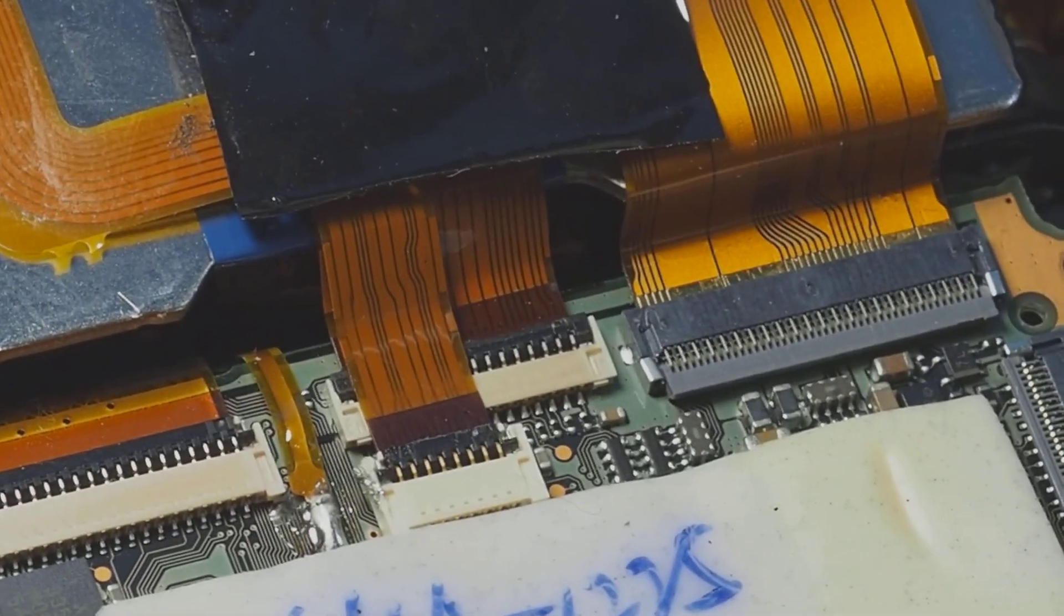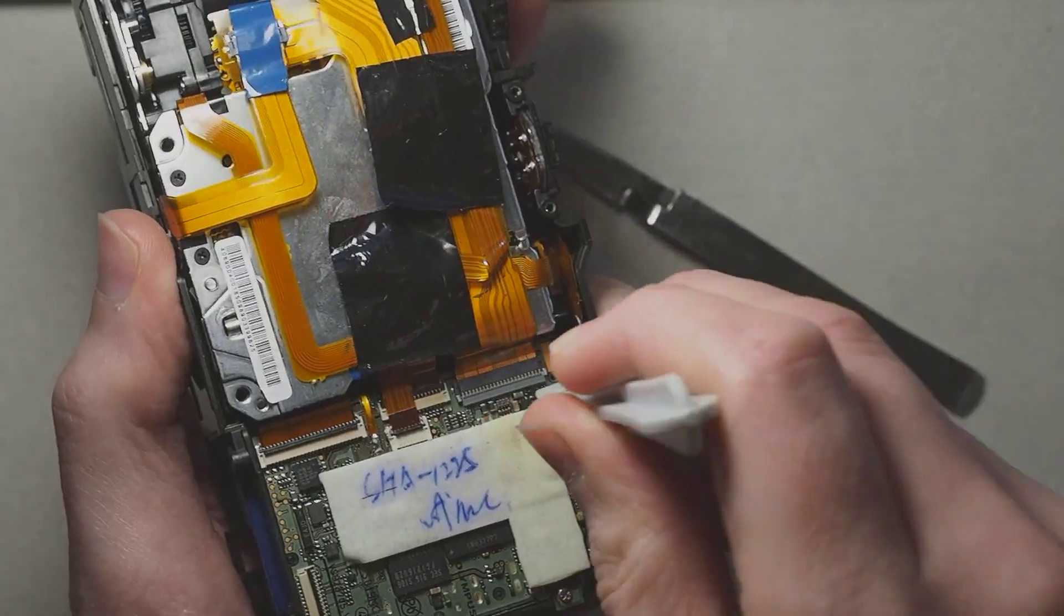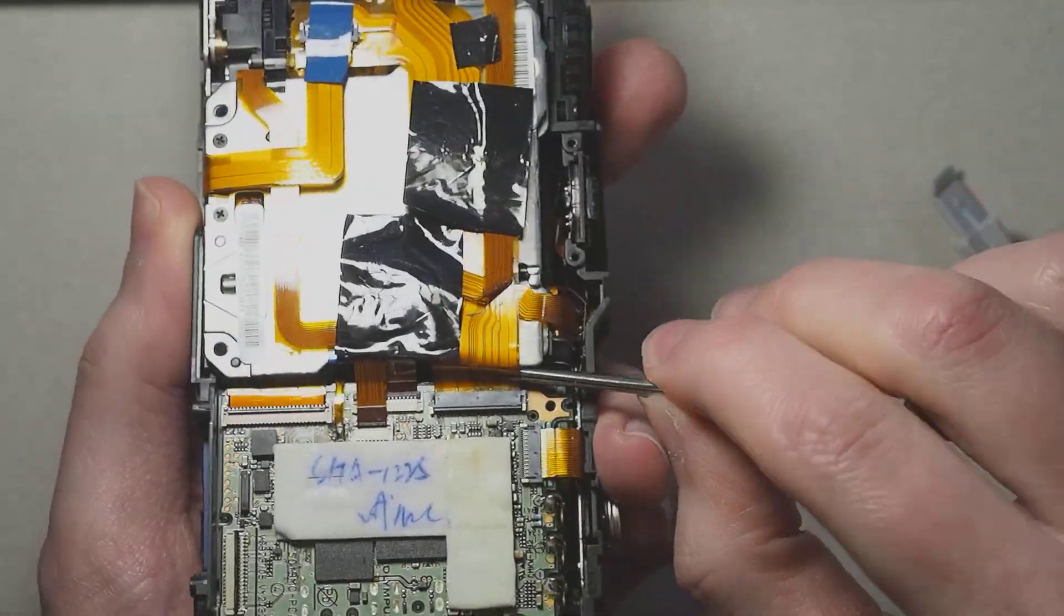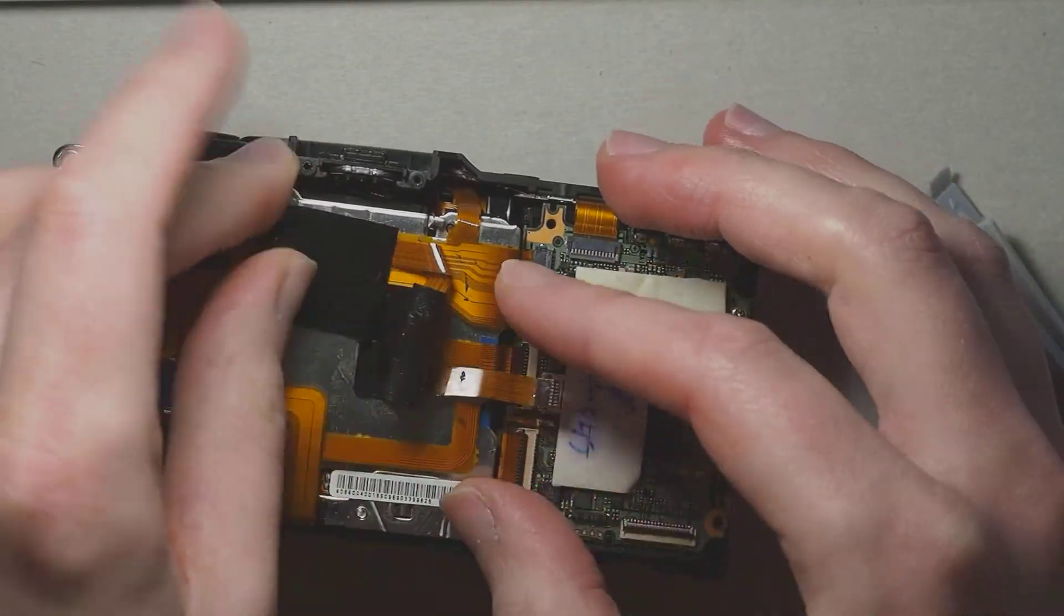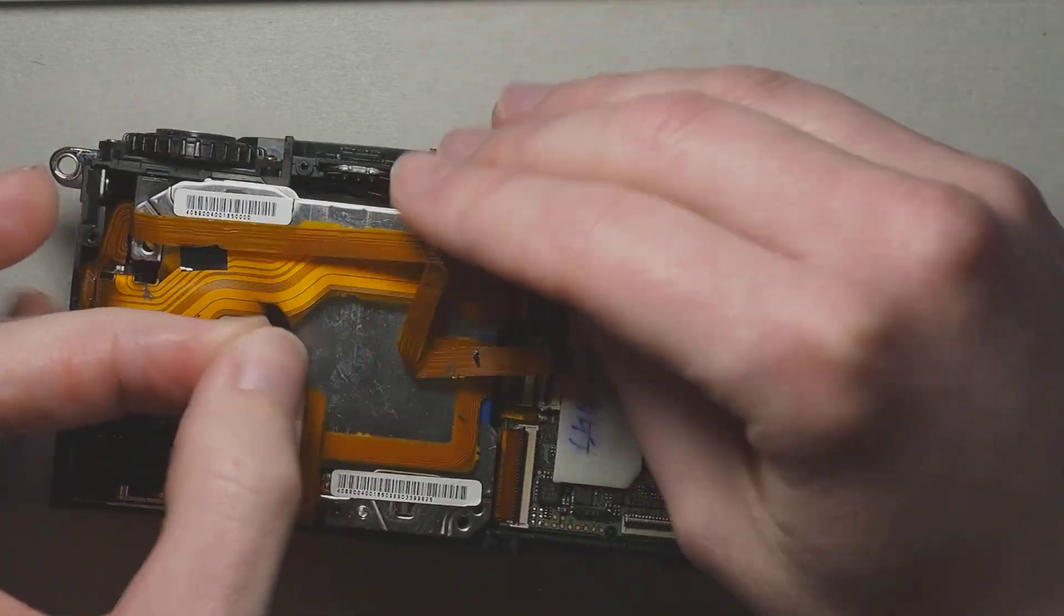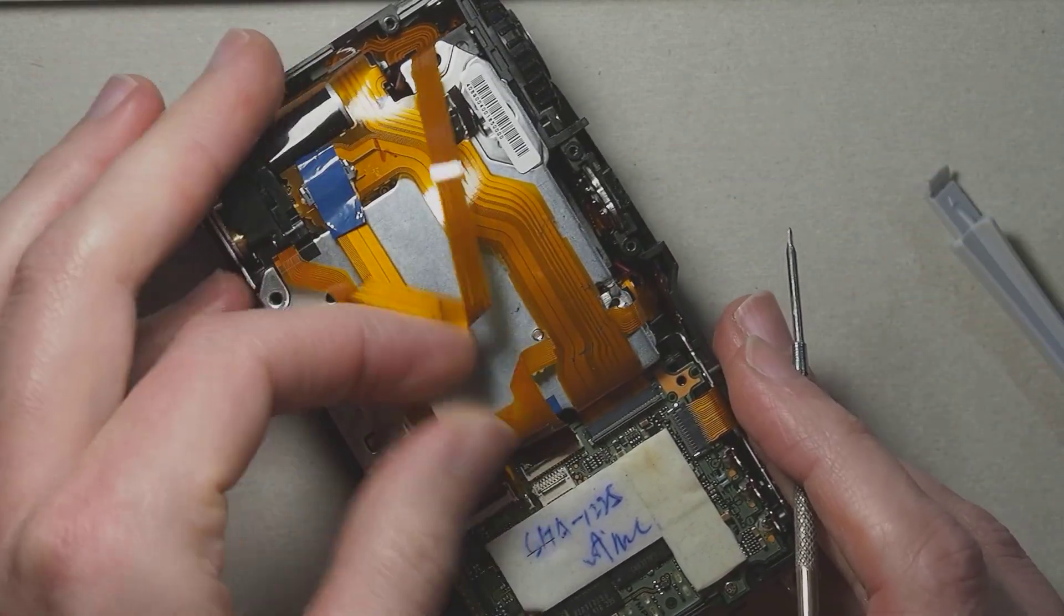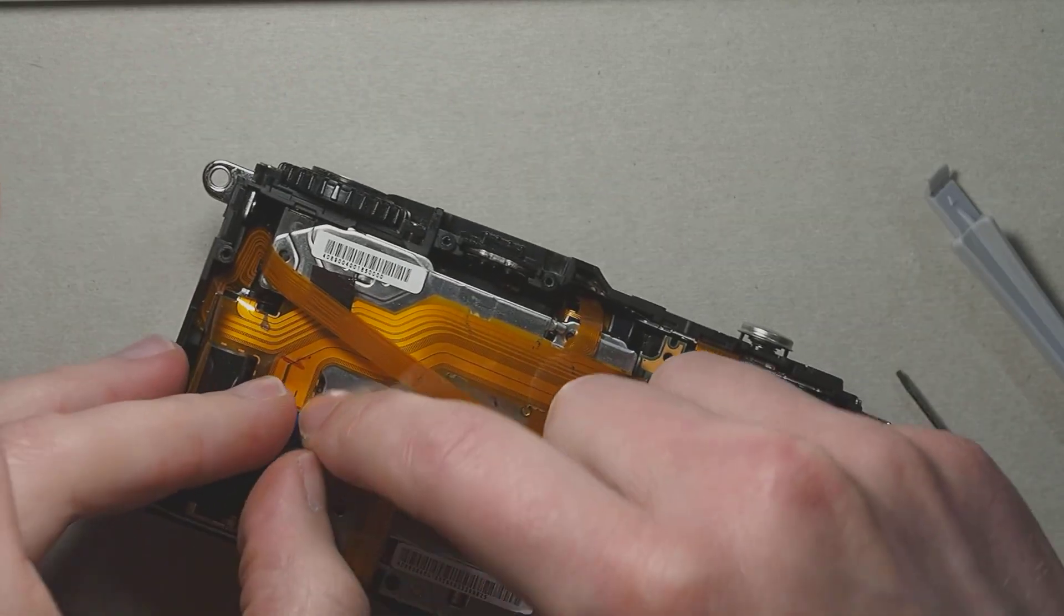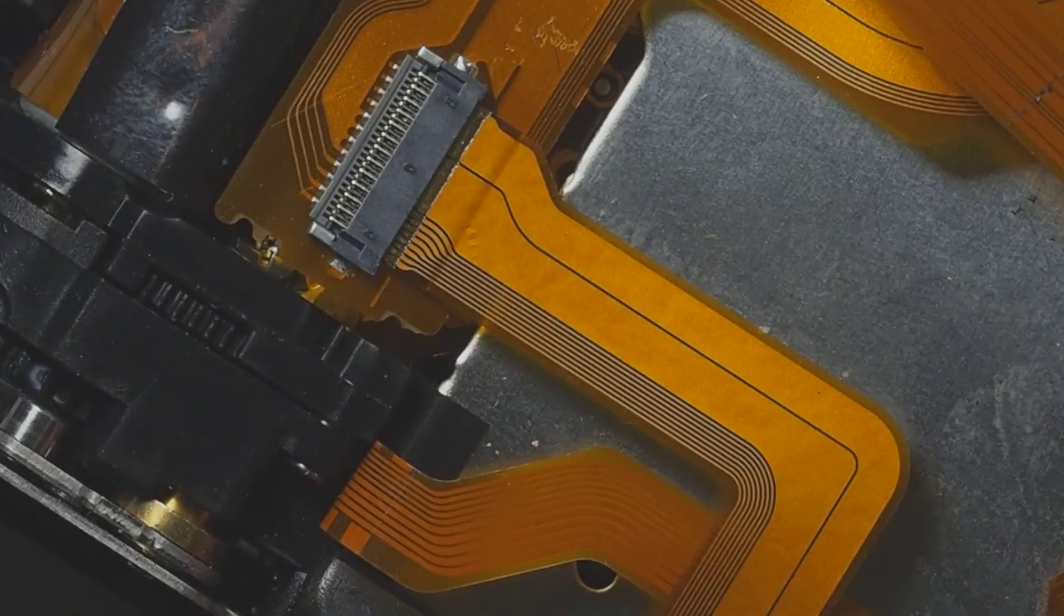These ribbon cables need to be disconnected except the one on the left that was unnecessary. These pieces of tape keep the ribbon cables in place so they will have to be removed. This blue tape reveals another ribbon connector which is especially fiddly because it's not supported from below.